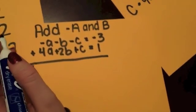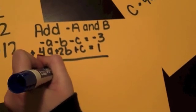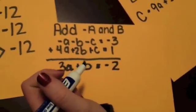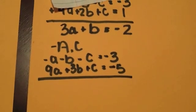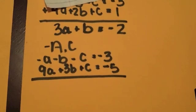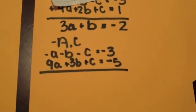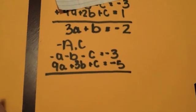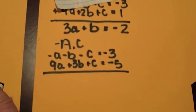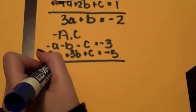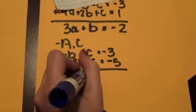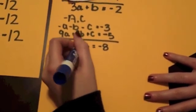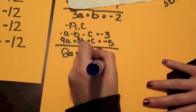And that is going to give us 3A plus B equals negative 2. Now we are going to add the negative equation of A plus C in order to again cancel out the C variable. So we have negative A minus B minus C equals negative 3, plus 9A plus 3B plus C equals negative 5. So that gives us 8A plus 2B equals negative 8, which simplifies to 4A plus B equals negative 4.